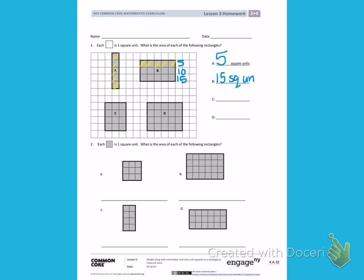Rectangle C. I have 1, 2, 3 squares going across the top row, so I can count by 3's like in an array. 3, 6, 9, 12. The area of rectangle C is 12 square units.